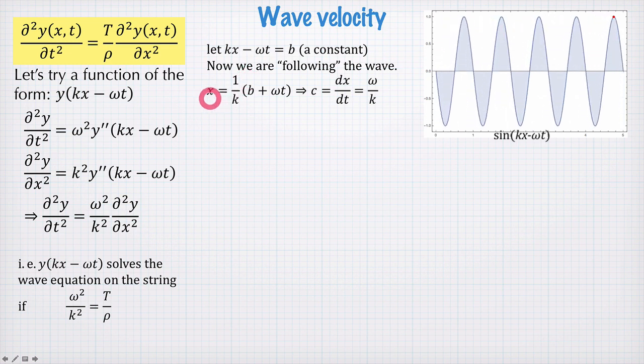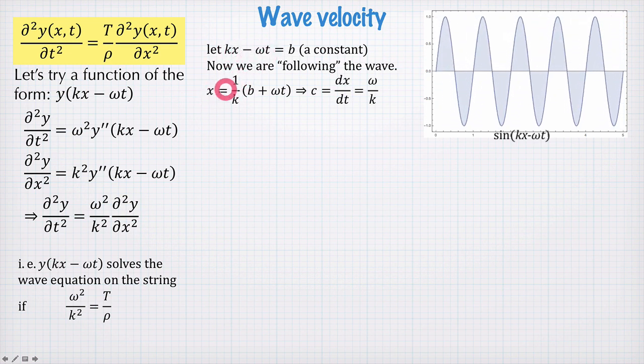So to find out how fast the wave is going, we just rearrange this equation here and we get x is 1/k times b plus ωt and the speed, c, is dx/dt, which is ω/k.